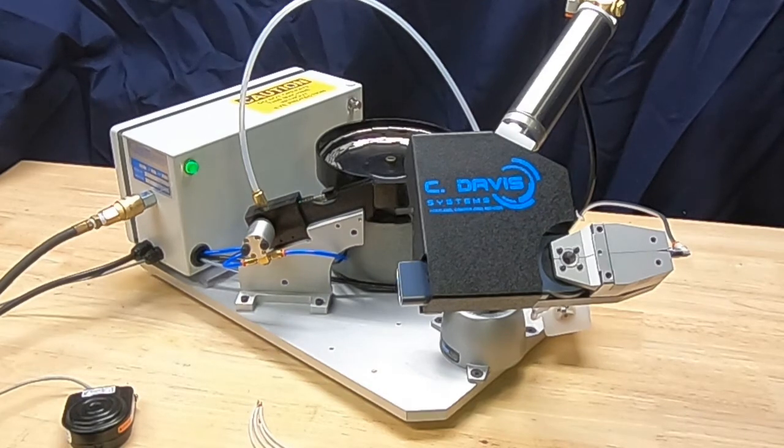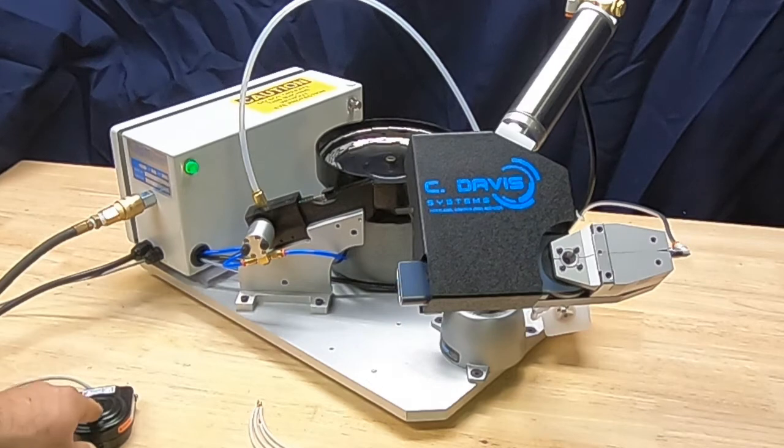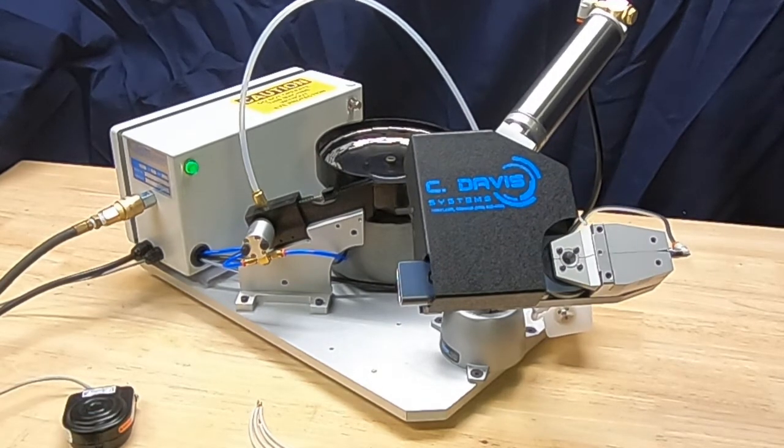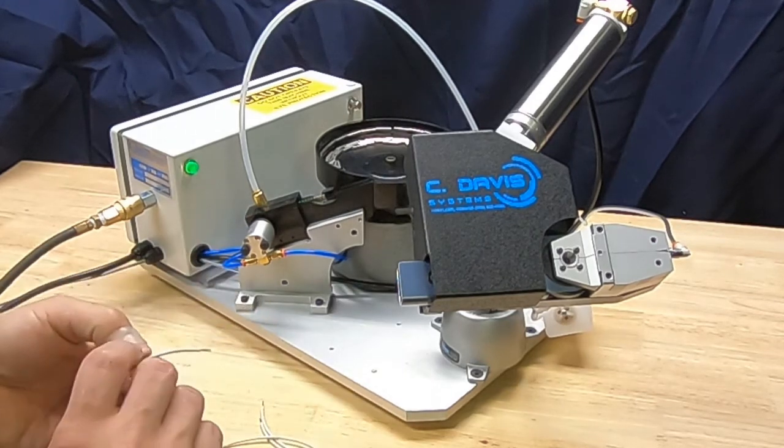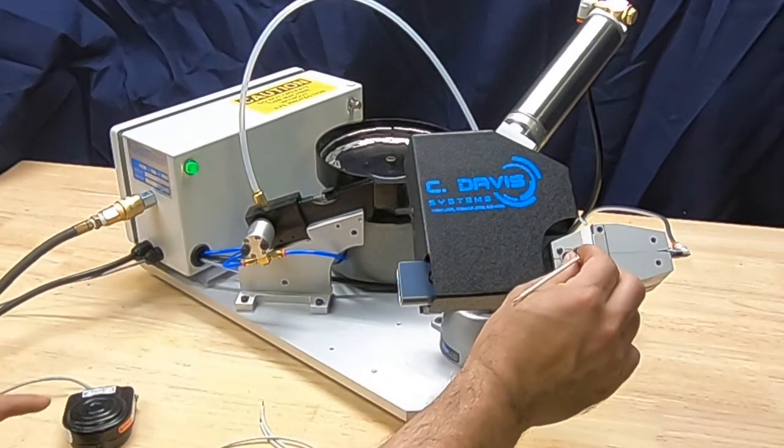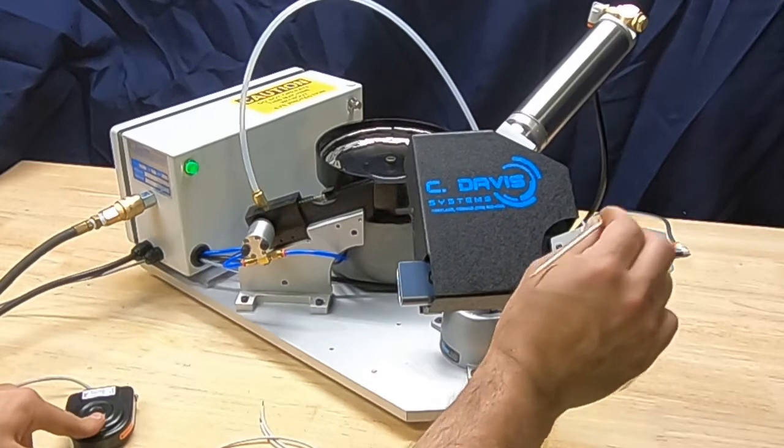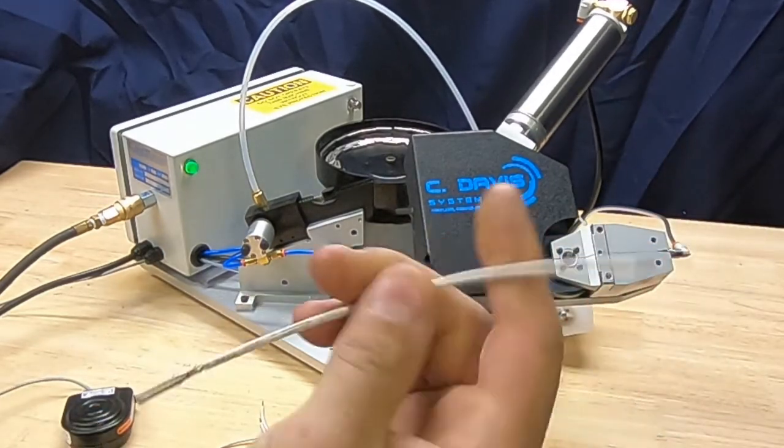Okay, so now it's full. There is not one currently in here, so I'm going to cycle it once. And now we have a contact in the crimp head. From this point, it's as easy as inserting a wire, hitting the foot pedal, and you have a crimped contact.